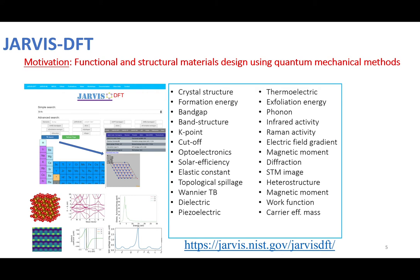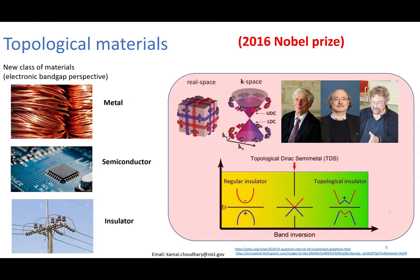JARVIS density functional theory is a quantum mechanical density functional theory based database which is available at jarvis.nist.gov/jarvis-dft. It has several kinds of material properties such as crystal structure, formation energy, solar cell efficiency, topological spillage, Wannier tight binding Hamiltonian, STM images of 2D materials, electric field gradient, and so on. Today, I will be focusing on topological spillage for topological materials only.